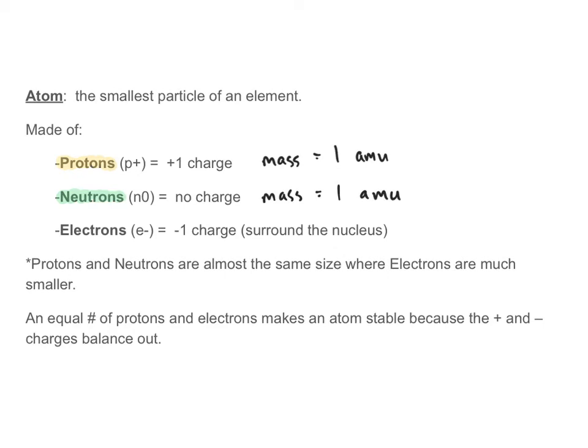Lastly, we have electrons. Electrons have a negative one charge, so they're the opposite charge of protons. Electrons are super tiny — they're flying around in this little electron cloud. Their relative mass is so small that we just say it's zero. It's almost two thousand times less than the proton or neutron, so we say electrons have a zero mass.